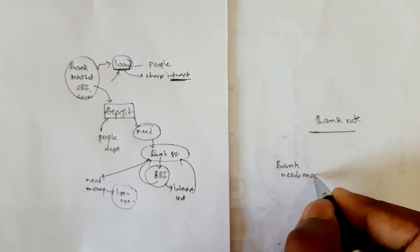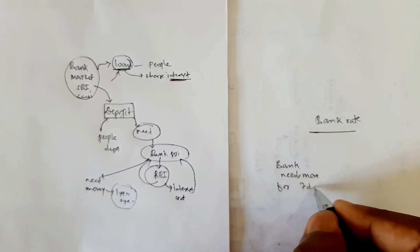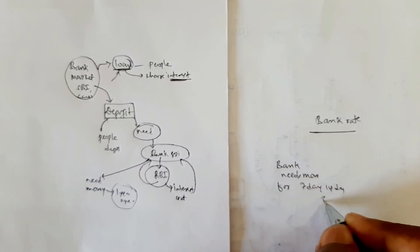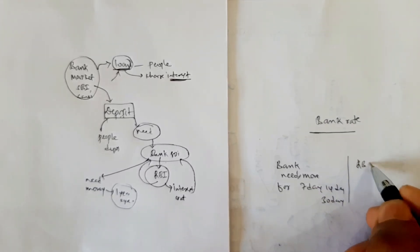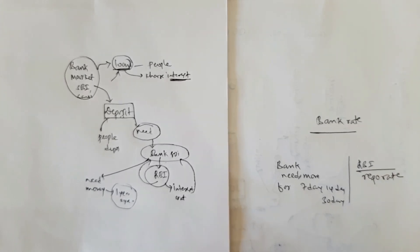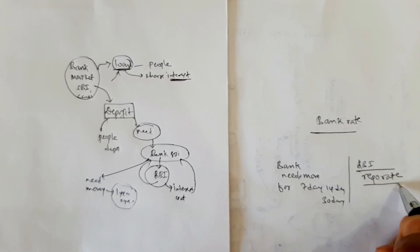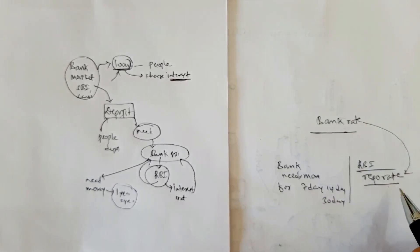If the bank needs money for the short term — like for seven days, 14 days, or 30 days — the RBI lends under the repo rate. The key difference between repo rate and bank rate is the time period: bank rate is long term and repo rate is short term.